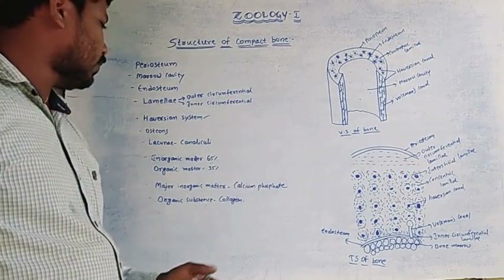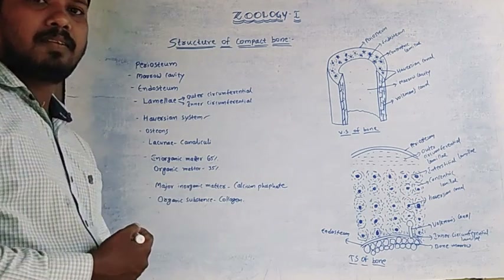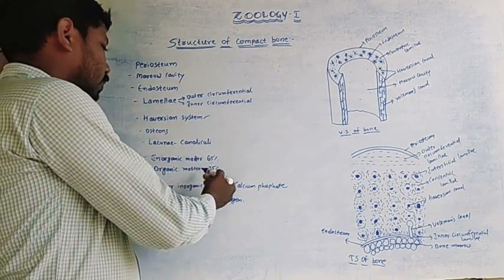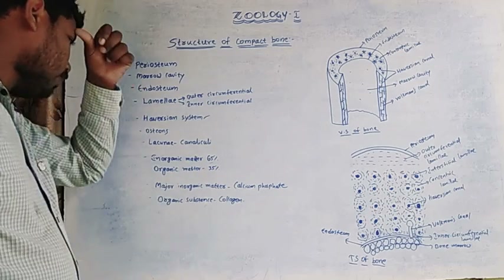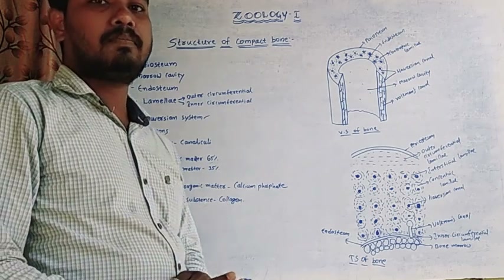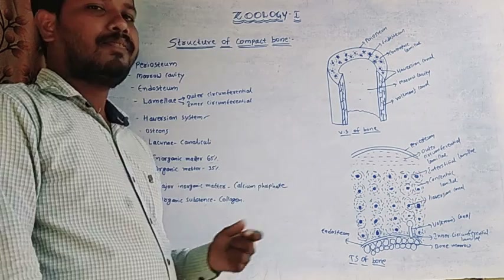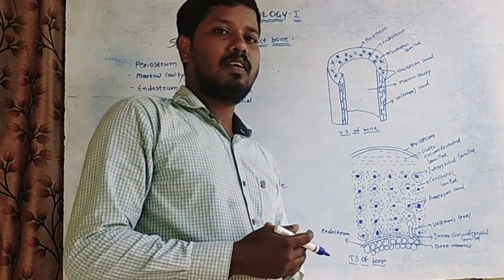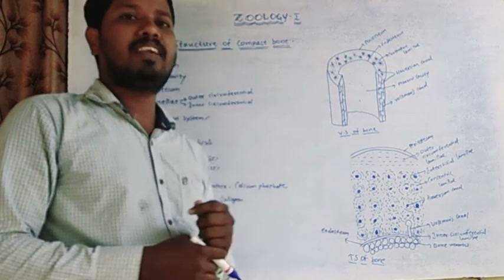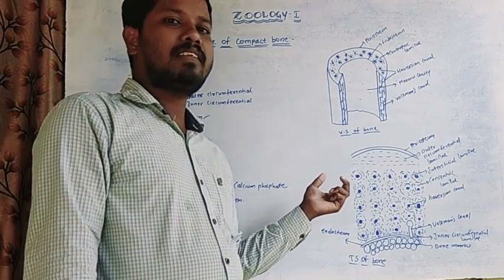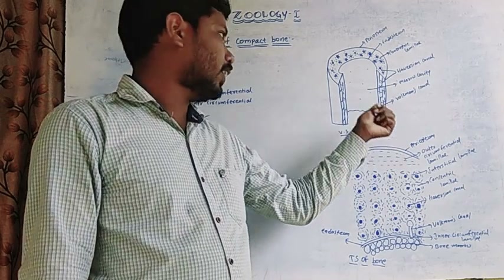Bone is composed of inorganic matter and organic matter. About 65% is inorganic matter; the major inorganic component is calcium phosphate, and the major organic substance is collagen. The bone also consists of arteries and veins — blood vessels that carry the blood produced in the bone marrow.